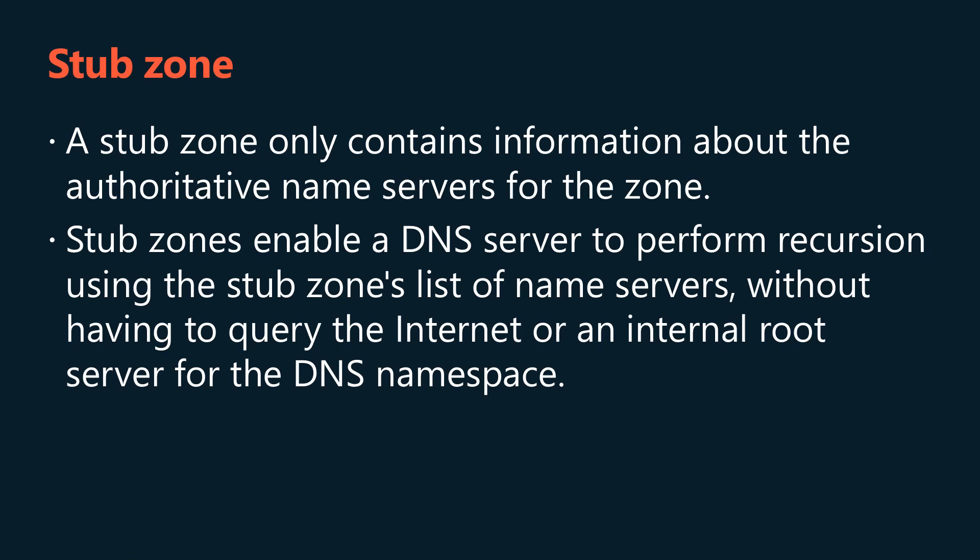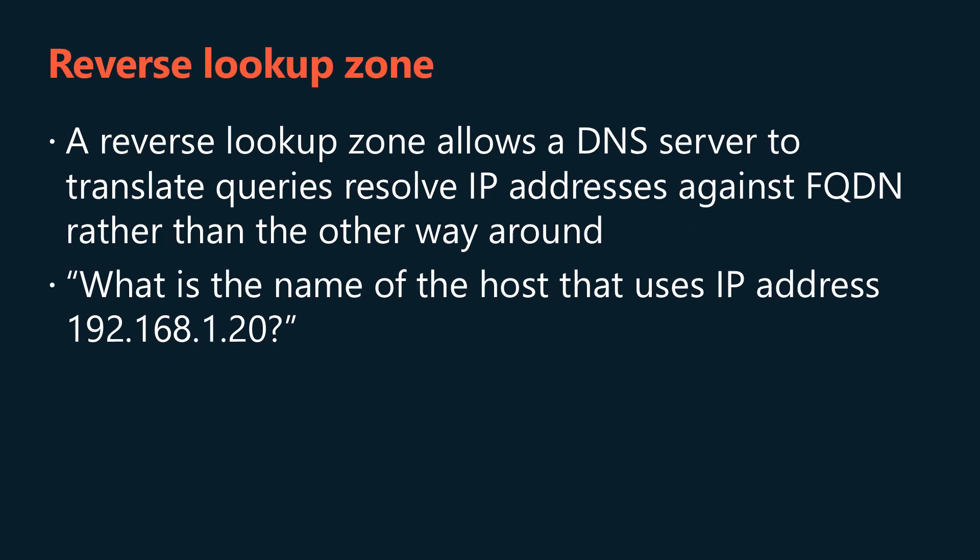Stub zones enable a DNS server to perform recursion using the stub zone's list of name servers without having to query the internet or an internal root server for the DNS namespace. In most DNS lookups, clients typically perform a forward lookup, which is a search based on the DNS name of another computer as it is stored in a host A resource record. This type of query expects an IP address as the resource data for the answered response. DNS also provides a reverse lookup process in which clients use a known IP address and look up a computer name based on its address. A reverse lookup takes the form of a question such as: can you tell me the DNS name of the computer that uses the IP address 192.168.1.20?